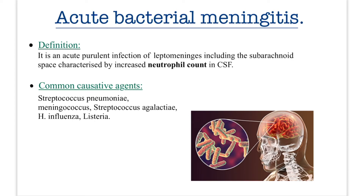Acute bacterial meningitis: first, the definition. It is an acute purulent infection of the leptomeninges. Purulent means pus-forming. Leptomeninges refers to the pia mater and the arachnoid mater, including the subarachnoid space. It is characterized by an increased neutrophil count in the CSF. Always remember: whenever it is bacterial meningitis or any bacterial infection, the neutrophil count will always be raised.